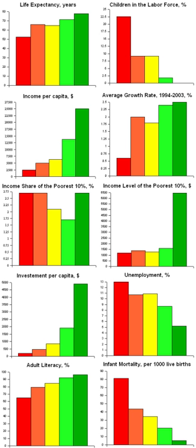Economic freedom has been shown to correlate strongly with higher average income per person, higher income of the poorest 10%, higher life expectancy, higher literacy, lower infant mortality, higher access to water sources, and less corruption.